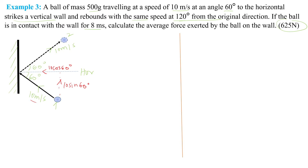After rebound, the ball moves at the same speed of 10 meters per second at an angle of 60 degrees to the horizontal. So the rebounding velocity also has two components: a component going upwards, which is 10 sin 60, and a component to the right, which is 10 cos 60 degrees. So we have the components.